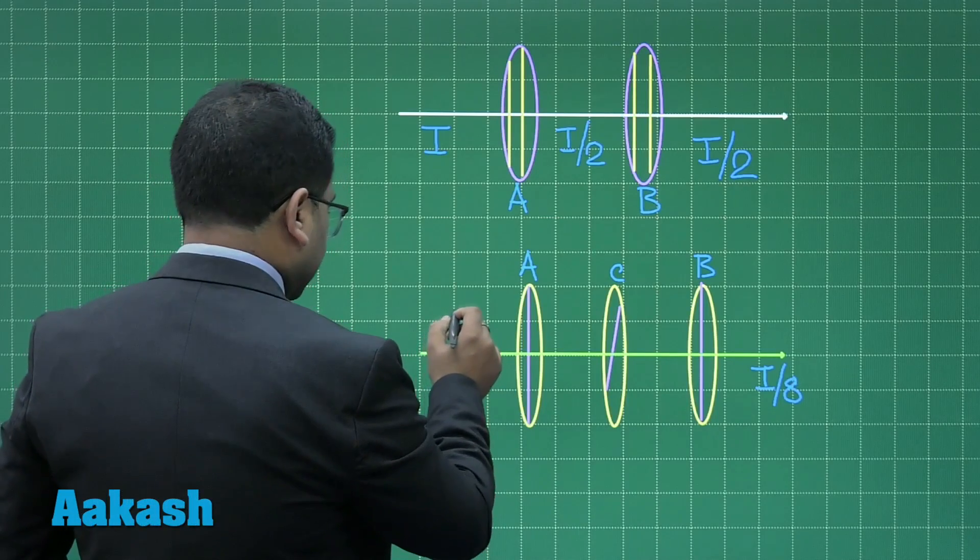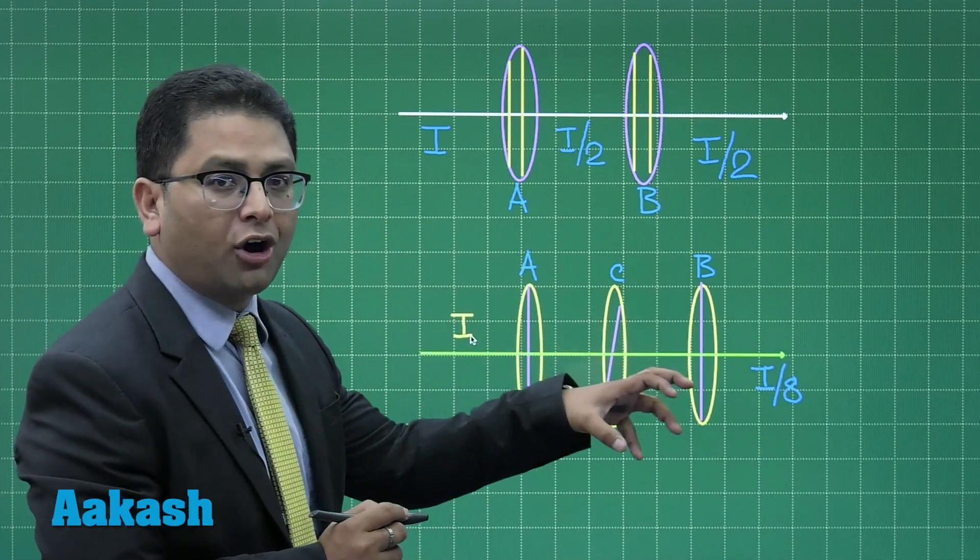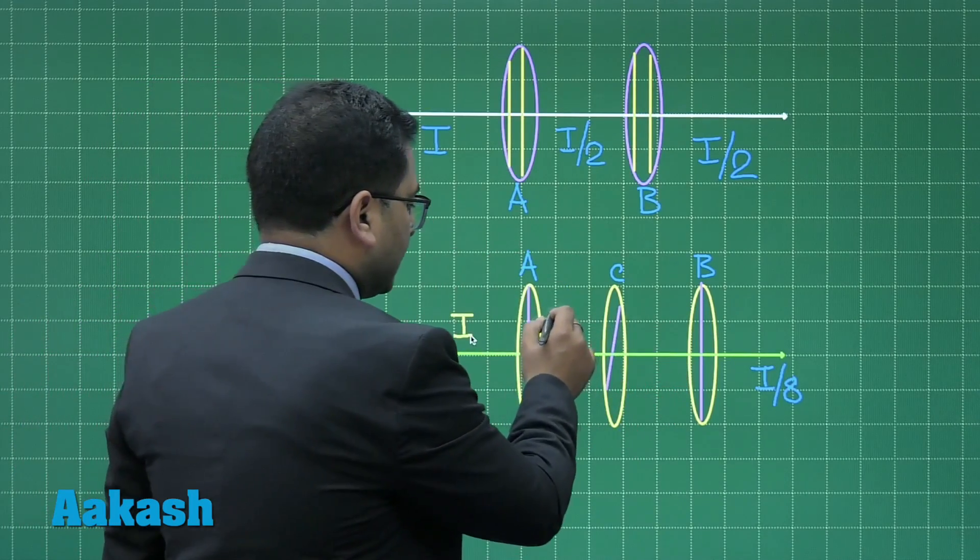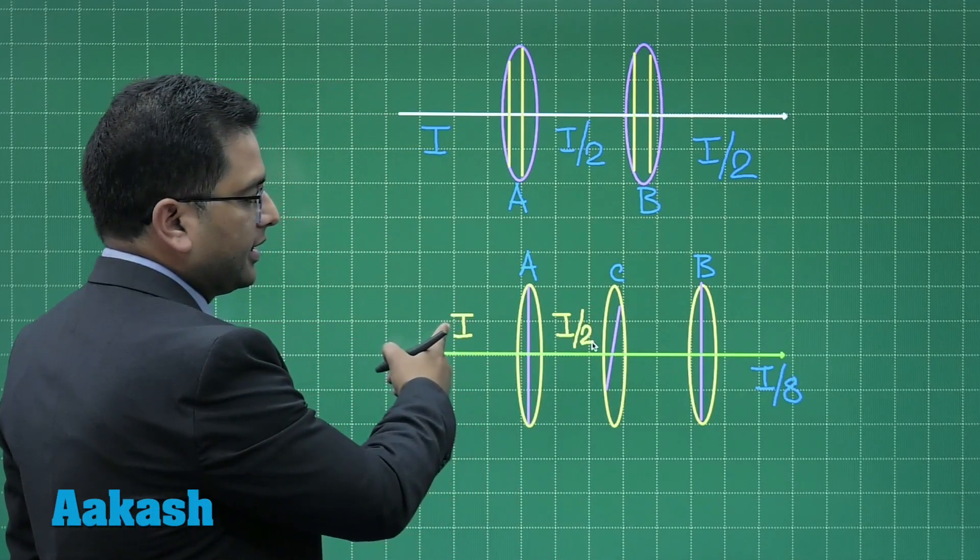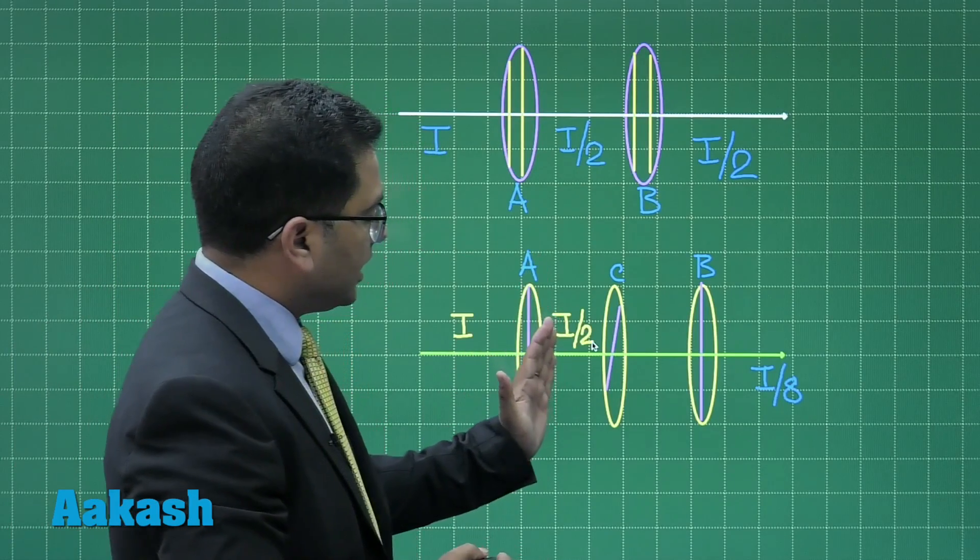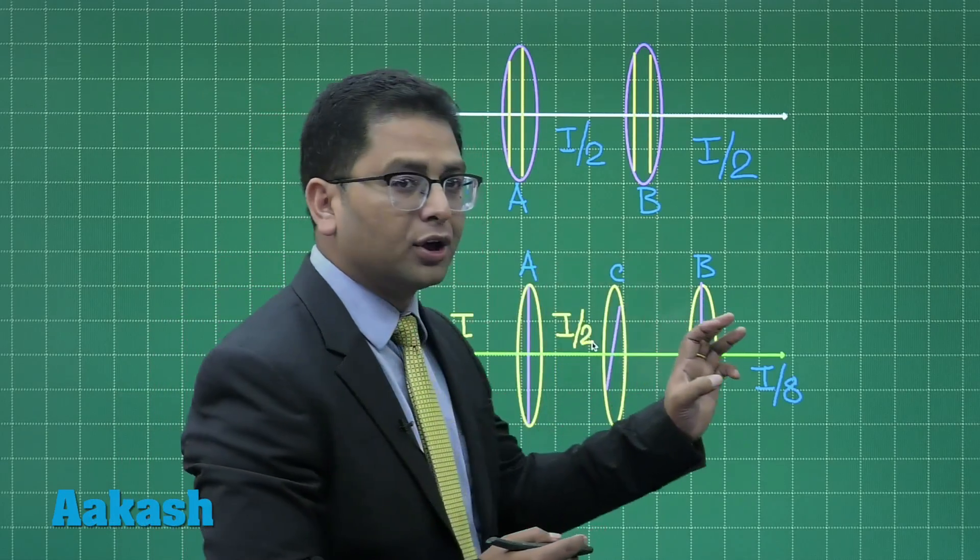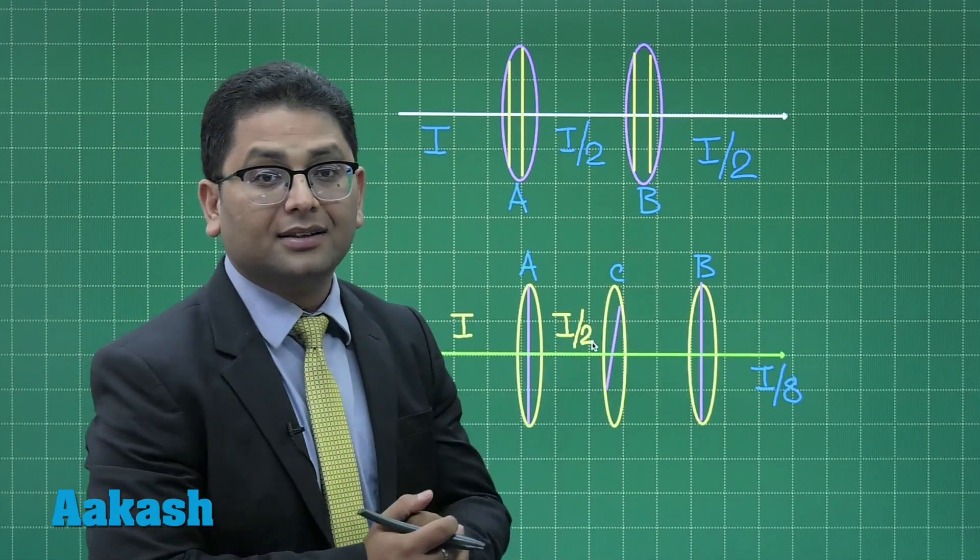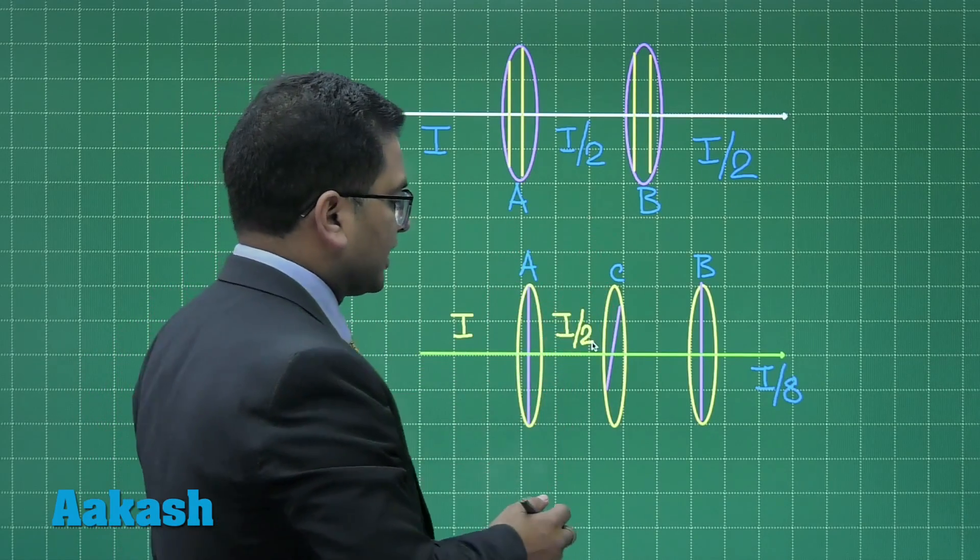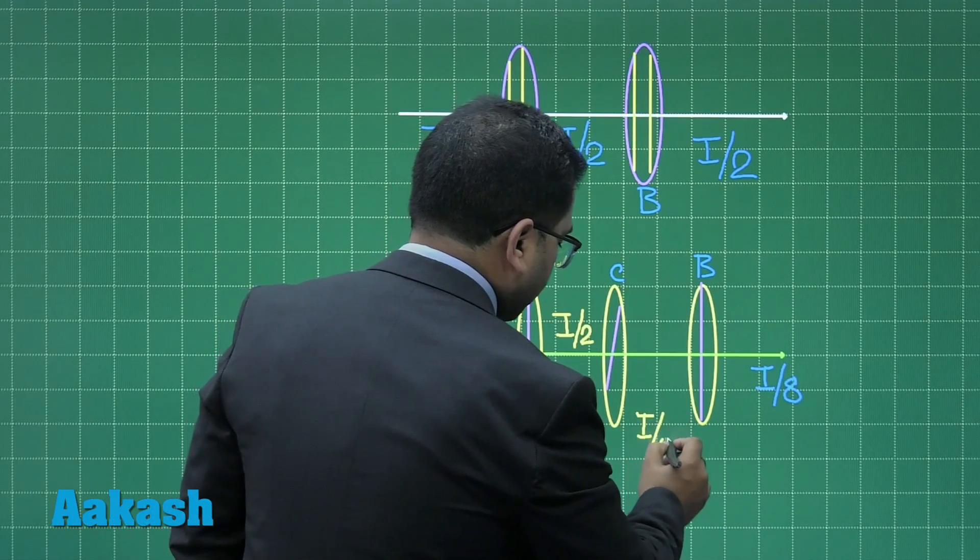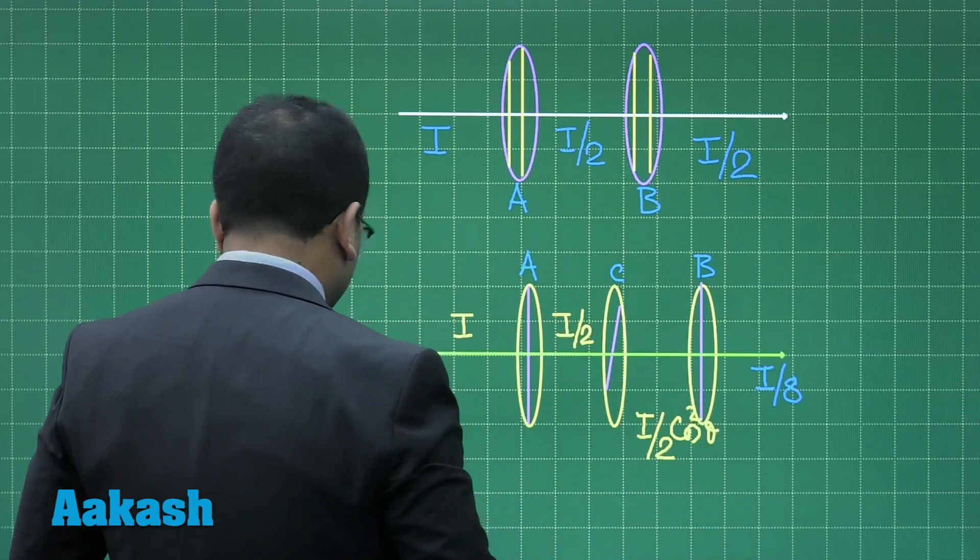If this intensity is I, it is a fact the unpolarized light when it passes through a polaroid the intensity becomes I by 2. Now the light that passes through A is plane polarized light, and when plane polarized light passes through a polaroid we need to apply the law of Malus. So the angle between this polarizing axis and this be theta, then that would be I by 2 cos squared theta.